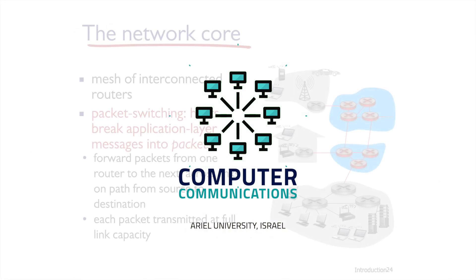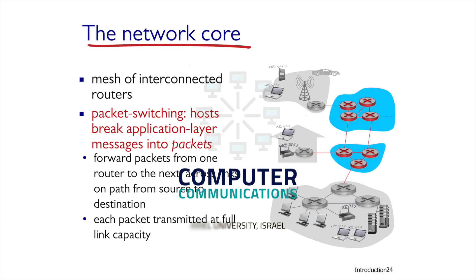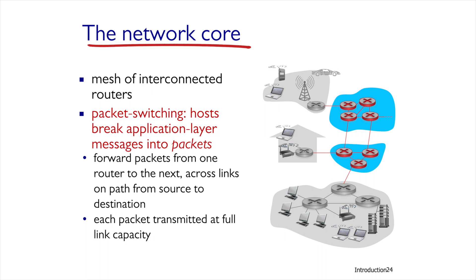In the previous units, we introduced two parts of the internet: the network edges and the access network's physical media, which are the lines and components used to connect to the network.